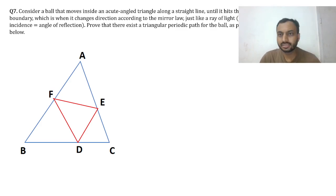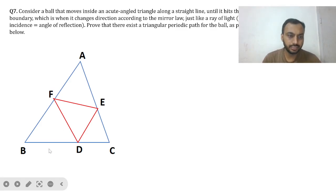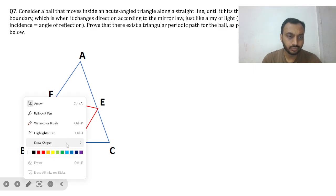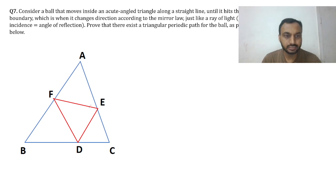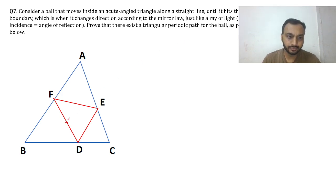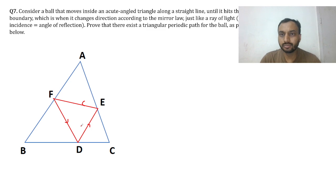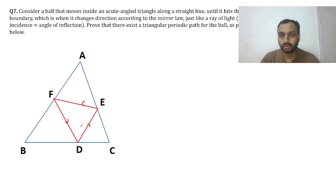Hi guys, let's see question number 7 of ISA UGB 2025. In this problem, we have a ball that moves inside an acute angle triangle along a straight line path until it hits the boundary, which is when it changes direction according to the mirror law — that is, angle of incidence equals angle of reflection. We have to prove that there exists a triangular periodic path for the ball.